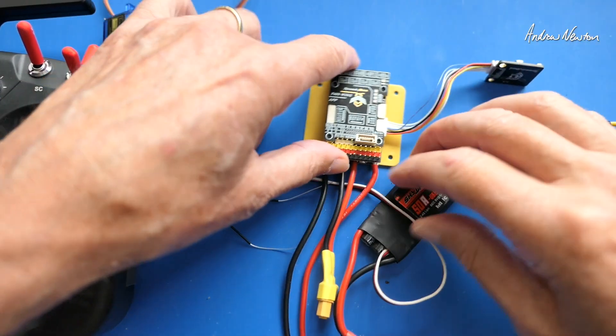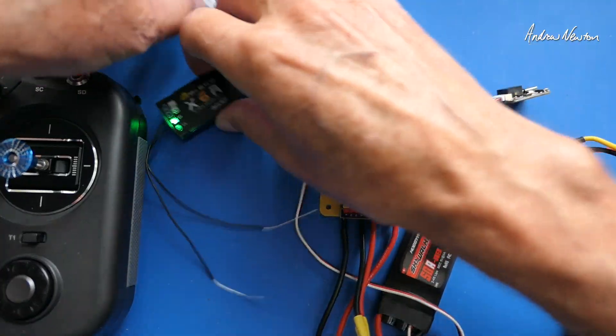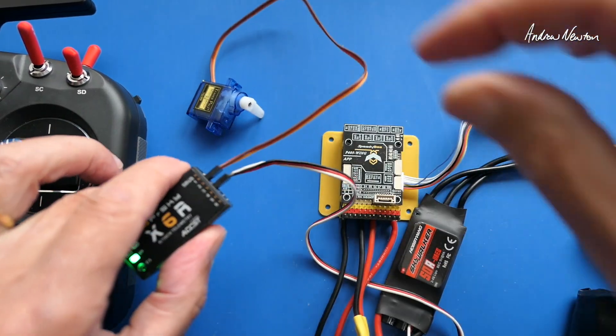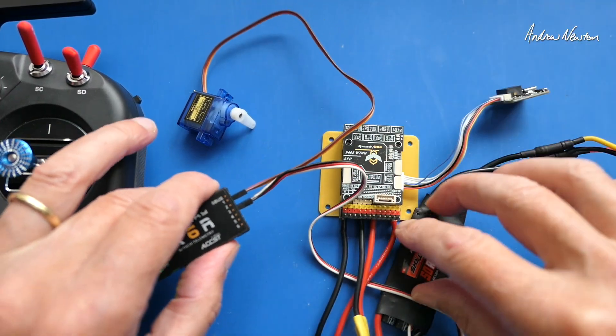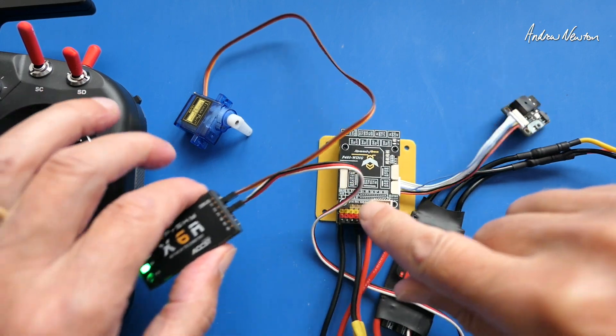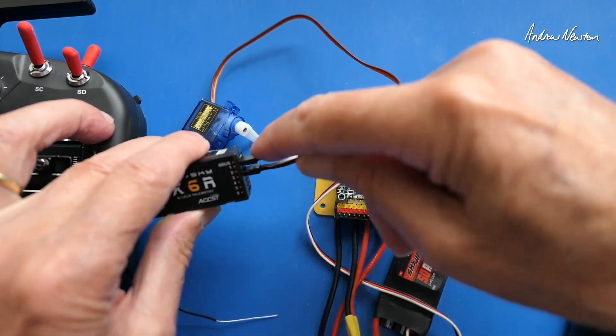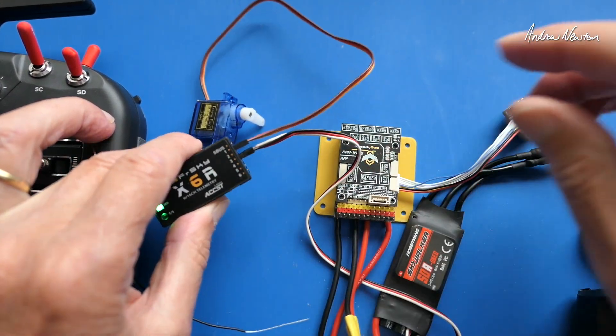So now let's introduce the flight control board. Now instead of everything connecting into the receiver, the servo and the electronic speed controller, they will now connect into the flight control board. And we can't connect the PWM connections to the flight control board. That has to be a serial connection like SBUS there.